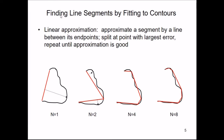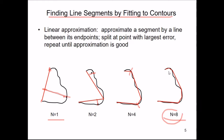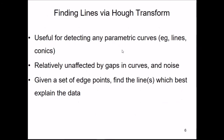For finding line segments by fitting to contours: a line approximation goes from start to end as a vector. We approximate a segment by a line between its endpoints, then split at the point with the largest error and repeat until the approximation is good. We split the line, rejoin, then split again — continuously, as many times as needed — until it completely fits the contour.